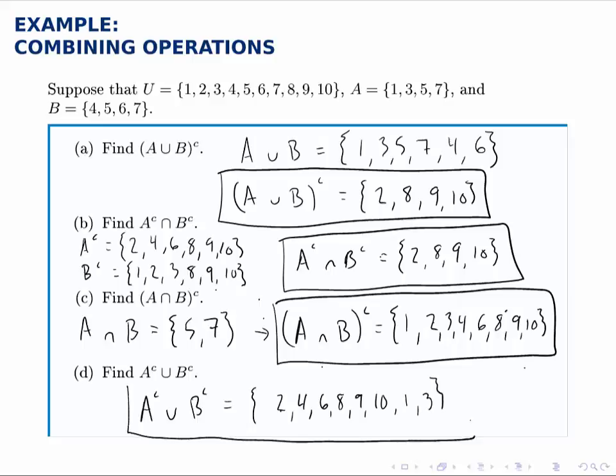These last two sets are not listed in the same order, but they are the same set. Because again, the order within a set doesn't matter, it just matters what elements we have listed. So the complement of the intersections and the union of their complements are identical.